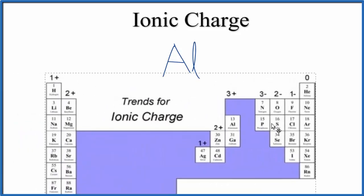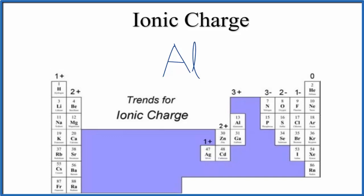If we look at the periodic table, we can see this trend here for ionic charge. In group 1, everything is 1+. Group 2, they're 2+.